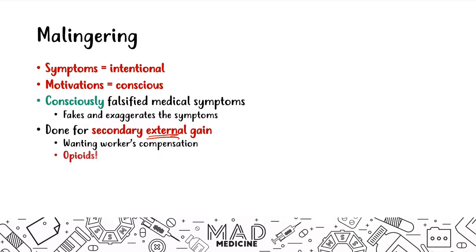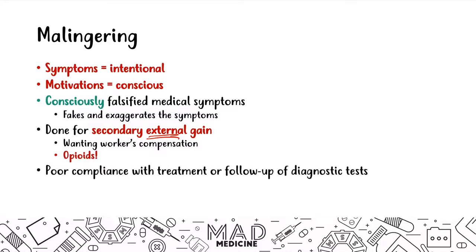They may want opioids — they may want drugs — so they pursue a secondary external gain. They may also want workers' compensation. Both of those reasons are very common, especially on Step 1. Opioids are particularly relevant given the current epidemic. Now, these patients are going to have very poor compliance with treatment and very poor follow-up on diagnostic tests, because the external gain they want usually doesn't require tests and is short-lived.